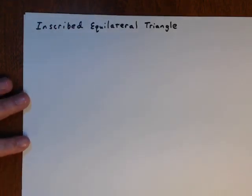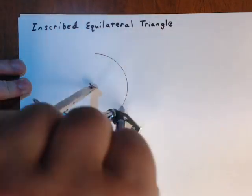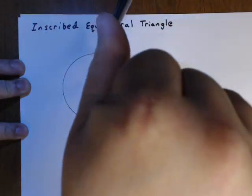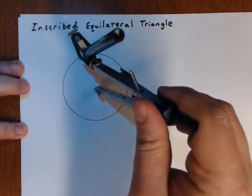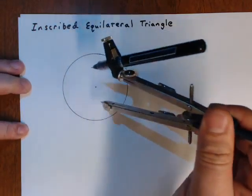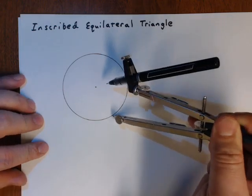To draw an inscribed equilateral triangle, we start with a point, which will be the center of the circle, and we draw a circle from that point.